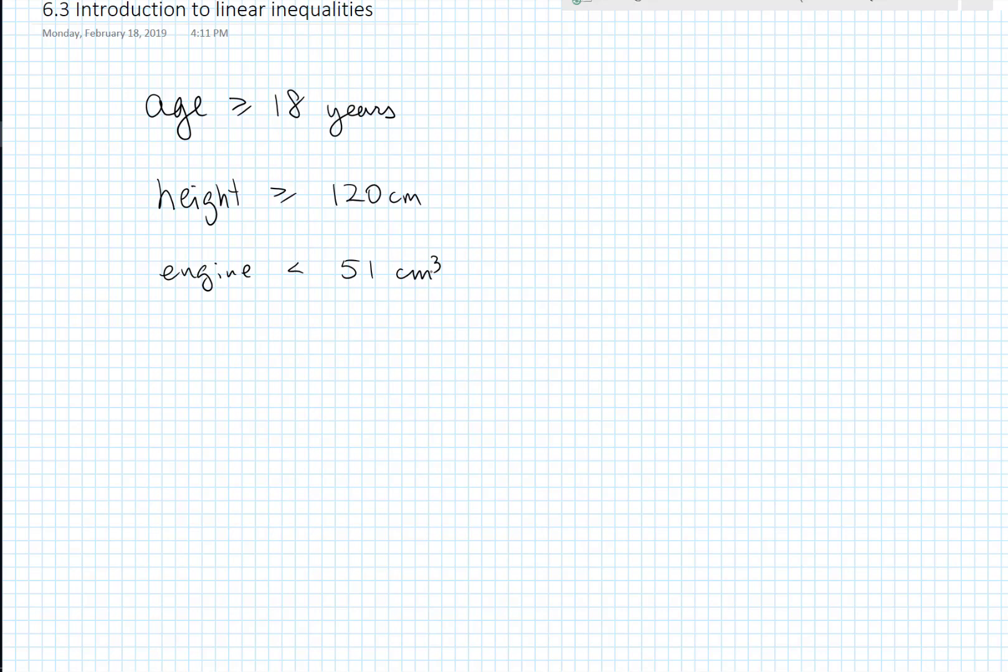Now, inequalities are used all the time in programming languages to set up decisions. So, for instance, you will very commonly see a line in a program. It doesn't matter what language, but this is sort of pseudocode here. If t is greater than 2, then do something. And this is a core feature of every programming language. So, you end up using inequalities all the time.